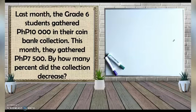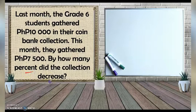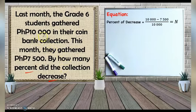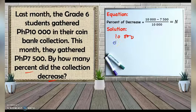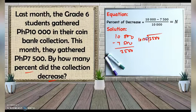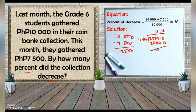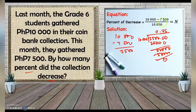Last example: last month, Grade 6 students gathered 10,000 pesos in their coin bank collection. This month they gathered 7,500 pesos. How many percent did the collection decrease? Percent of decrease equals 10,000 minus 7,500 divided by 10,000. That is 2,500 divided by 10,000. Working through the division: 25,000 divided by 10,000 is 2, then 50,000 divided by 10,000 is 5, no remainder. The answer is 0.25 or 25%. The coin bank collection decreased by 25%.